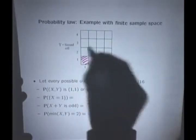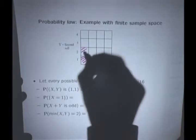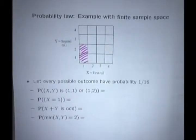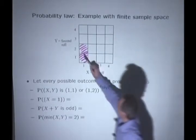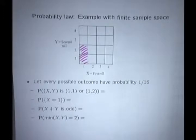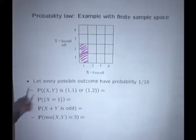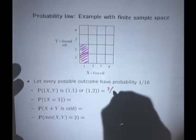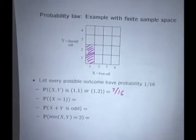We're talking here about this particular event (1,1) or (1,2), so it's an event consisting of these two items. According to what we were just discussing, the probability of a finite collection of outcomes is the sum of their individual probabilities. Each one of them has probability 1 over 16, so the probability of this is 2 over 16.